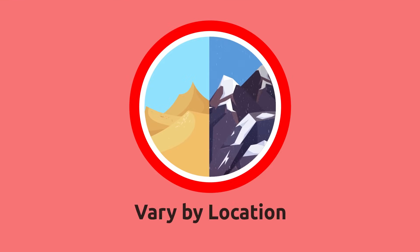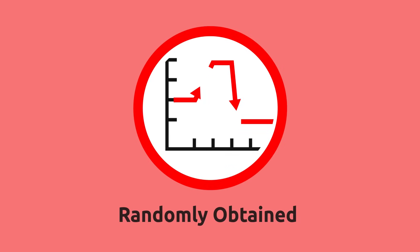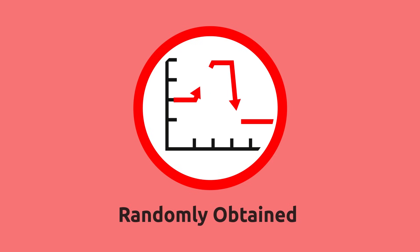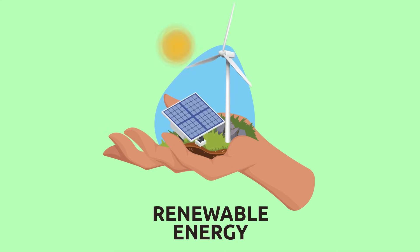Renewable energy resources are not found everywhere in the world — countries with shorter daylight hours cannot produce as much solar energy as other parts of the world. Obtaining renewable energy can be random or variable because it depends on natural phenomena that we cannot always predict, for example the amount of rainfall. To reach the world energy objectives and help take care of the environment, it's indispensable to accelerate the transition to renewable energies.